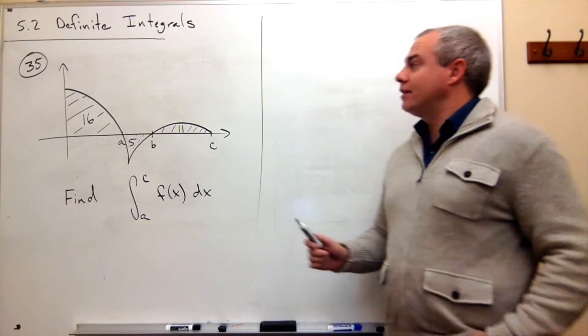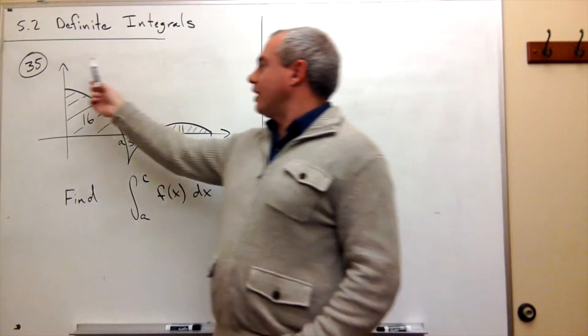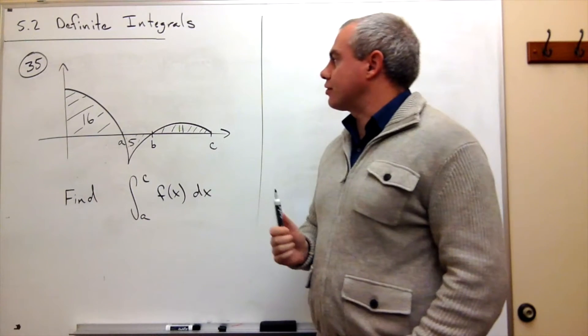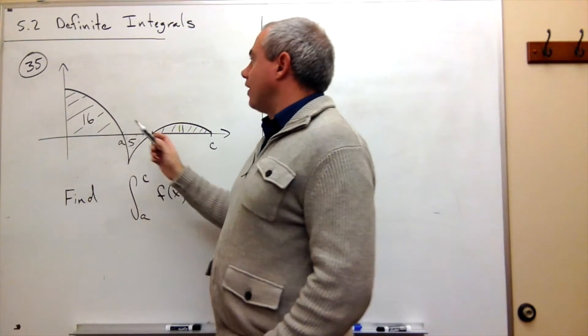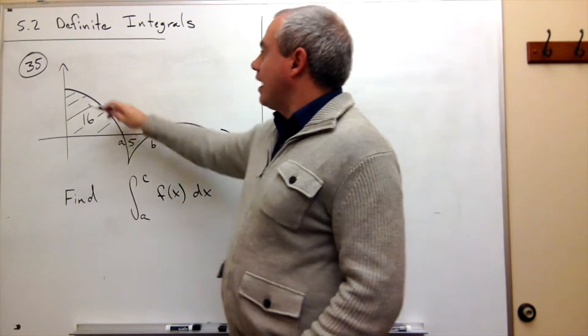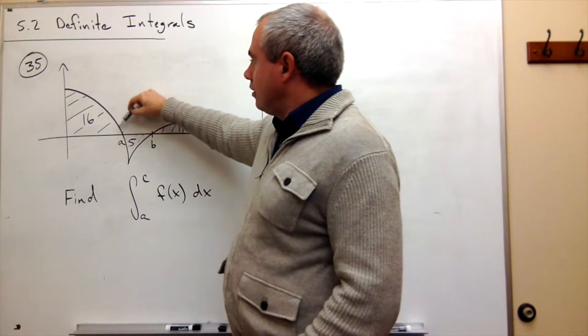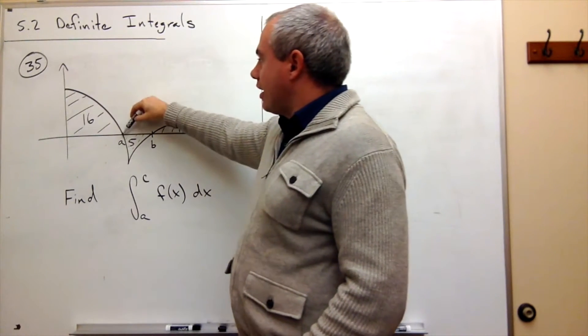Problem number 35: we're given a graph. Let's take a quick look at this graph. We have a function f, and under that function we can see that there's some area here.